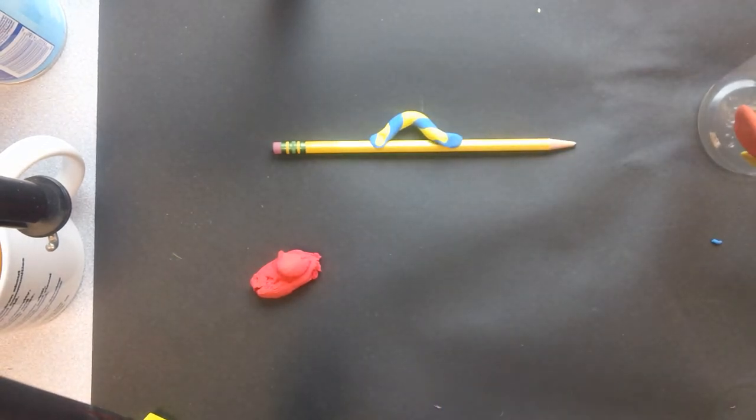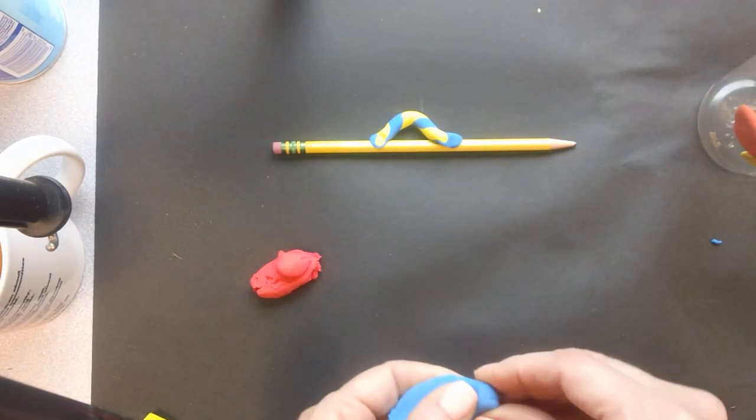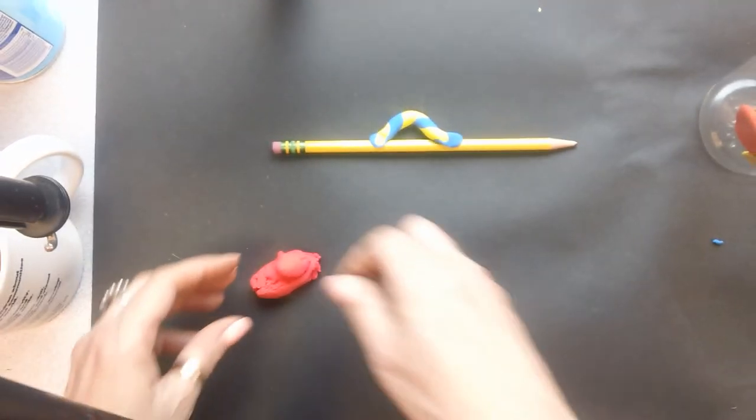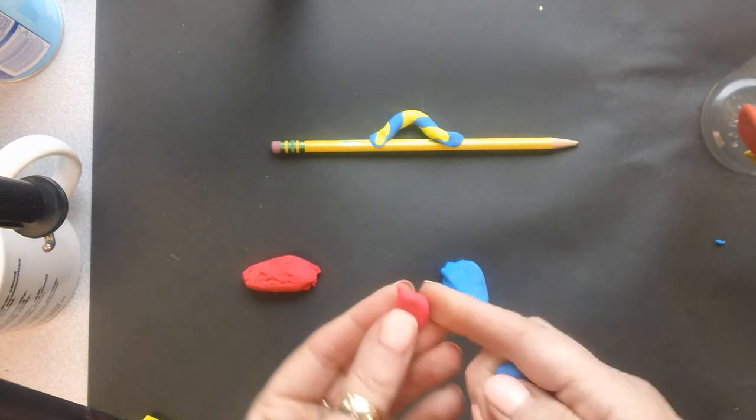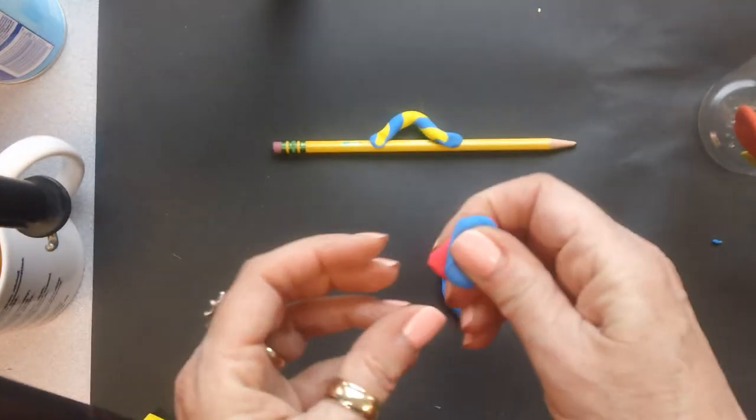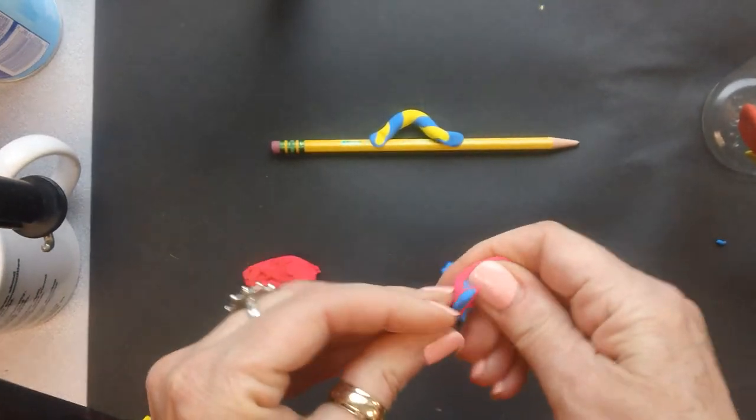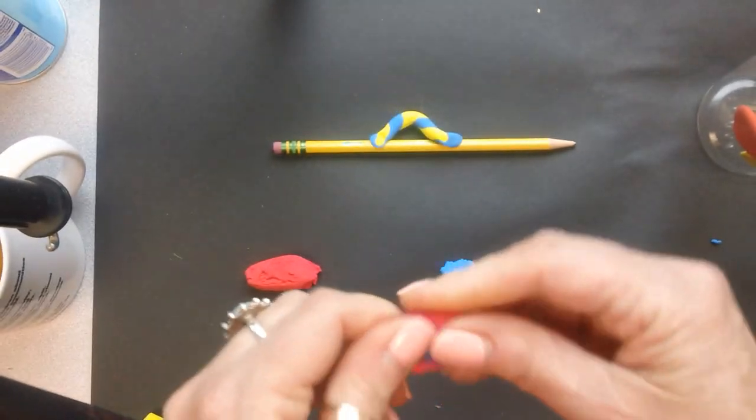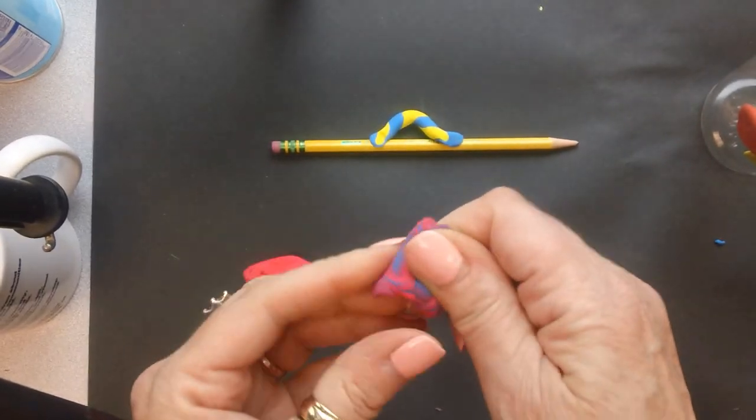And now I have to make some eggs. And eggs are really easy. I don't even need to show you that. But I do want to show you how to make purple. Because some of you might want to use purple in your project. And I'm just taking red and blue. And mixing that up. Maybe I'm going to have purple eggs. Maybe that's what it would be.